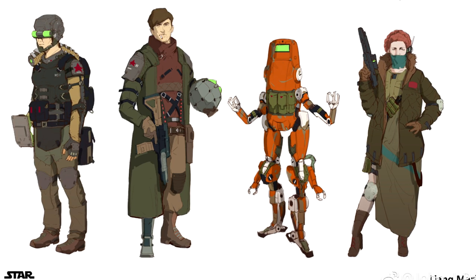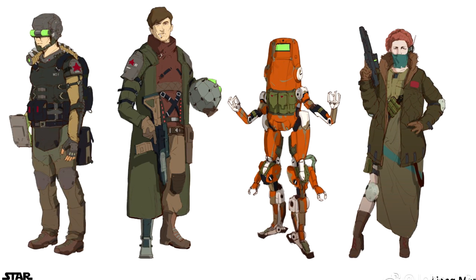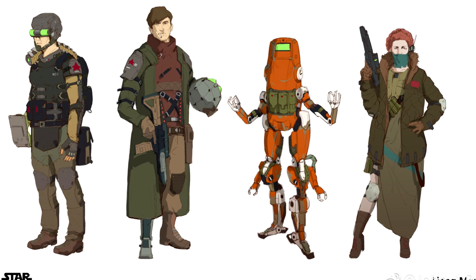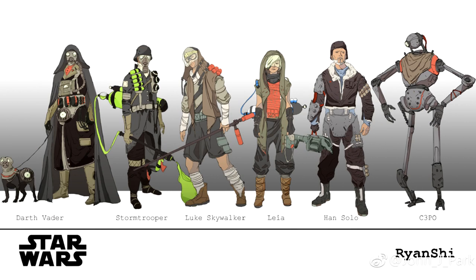The second set is something straight out of the Mad Max series, or pretty much any other post-apocalyptic world. Not quite sure why Han Solo looks like old Ben Kenobi, or why Vader has a puppy companion, but I wouldn't mind hearing more about their backstories and what the artist was thinking when designing them.